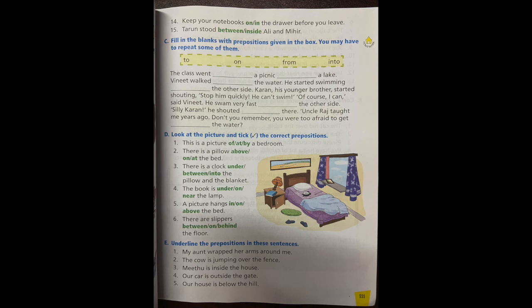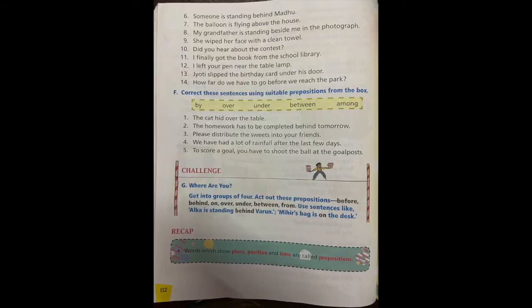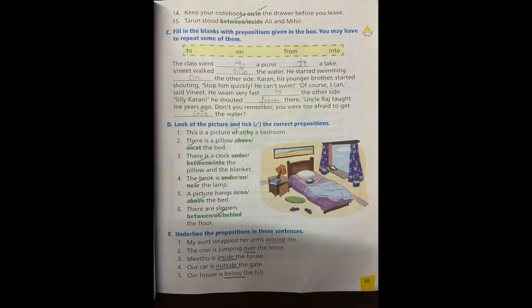Now from 6 to 14, you will do it yourself. Read every sentence carefully and underline the preposition. And then I will display the answers on the screen after section E. Then you can cross-check. Now look at section F.